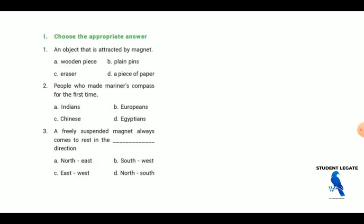Choose the correct answer. The object that is attracted by the magnet. What object is attracted by the magnet? Wooden piece can attract, plain pin attract, eraser attract, then a piece of paper attract. The answer is B.